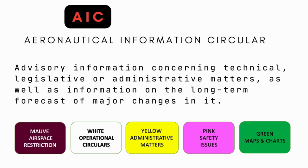AICs lapse after 5 years but, if still considered important, may be reissued. AICs are color-coded: white means operational circulars; yellow pertains to administrative matters including air traffic control facilities and requirements; pink signals safety issues; green pertains to map and chart information; and blue indicates amendments and airspace restriction charts.